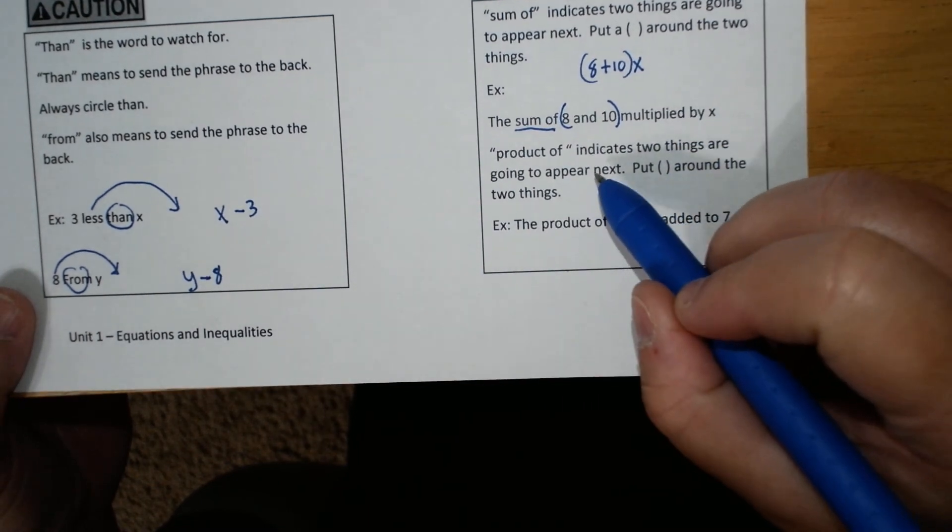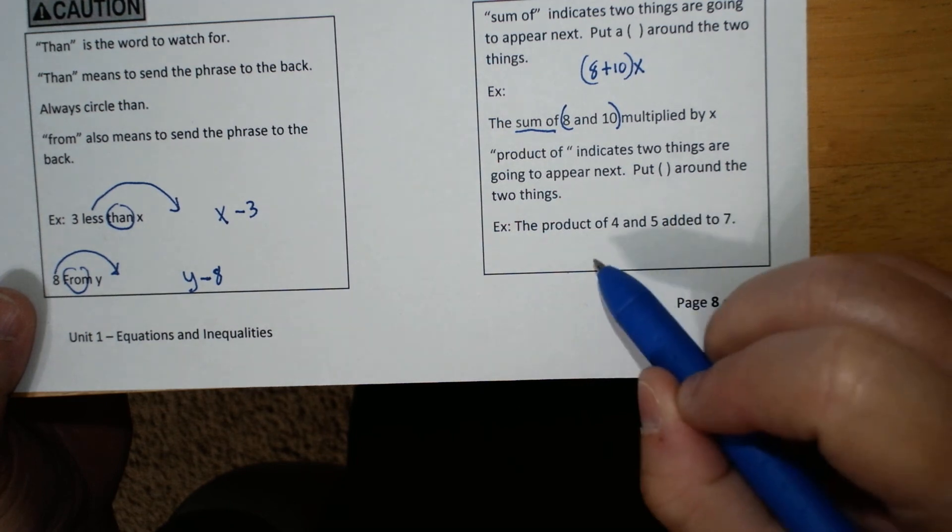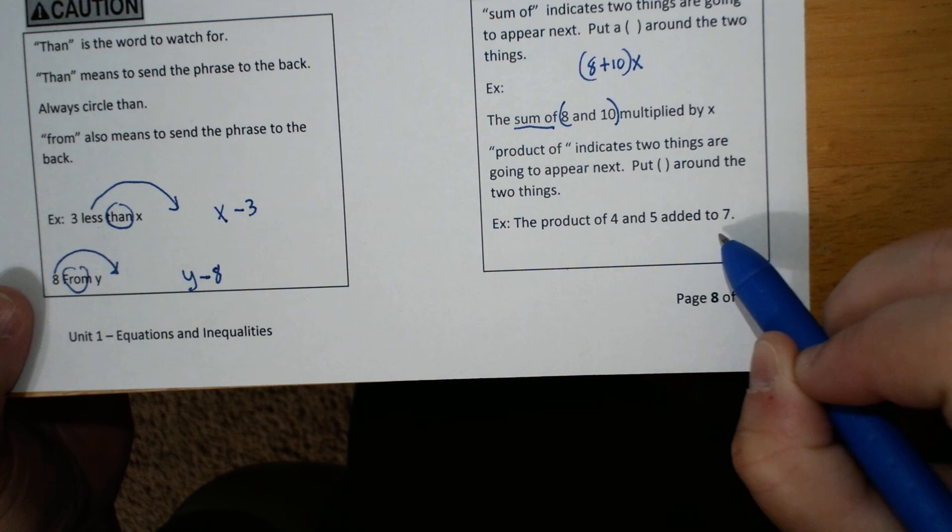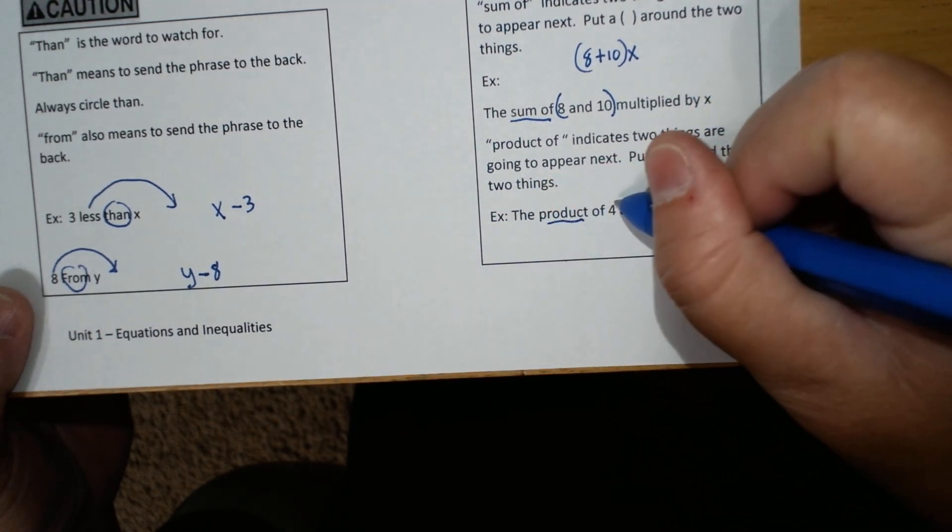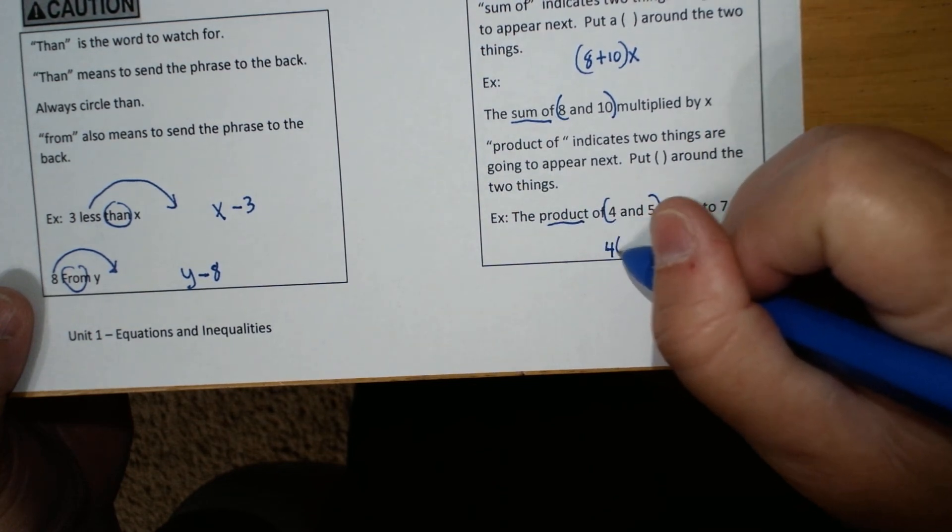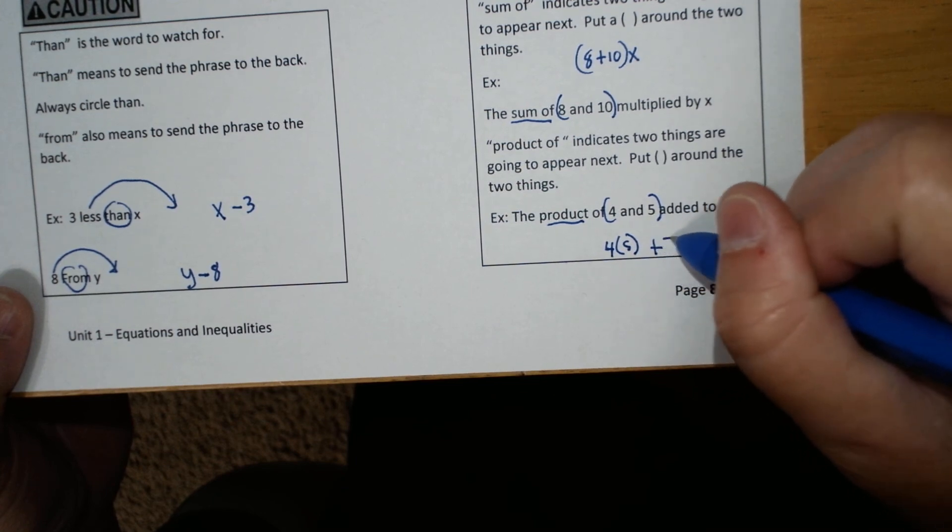Product of does the same thing. Indicates two things are going to appear next. Put parentheses around the two things. The product of four and five added to seven. This is not five added to seven. It's the product of four and five added to seven. So it's four times five.